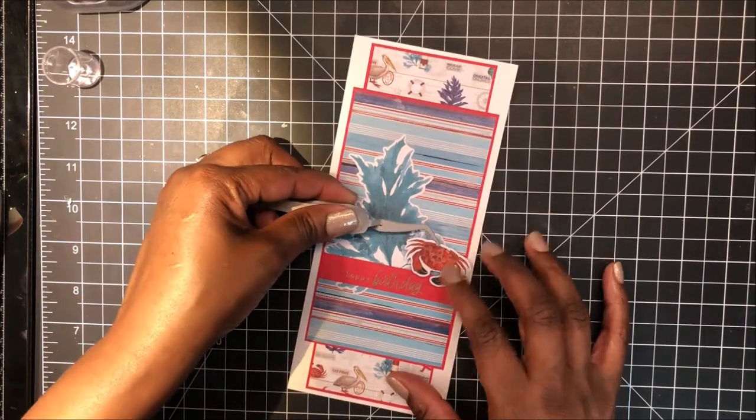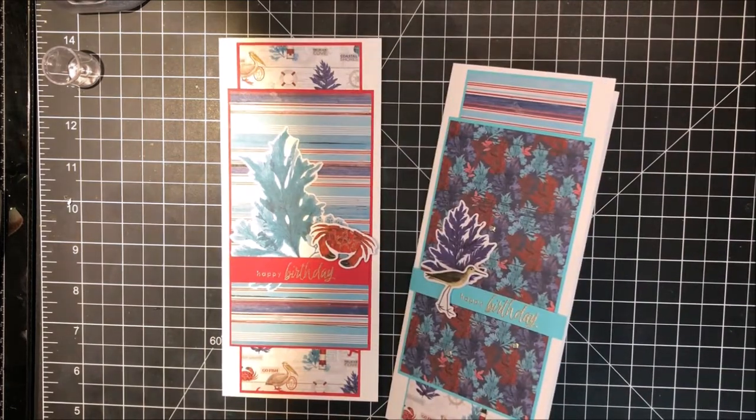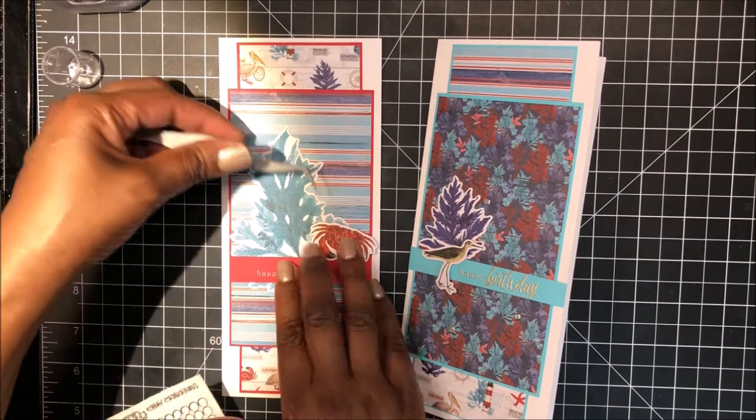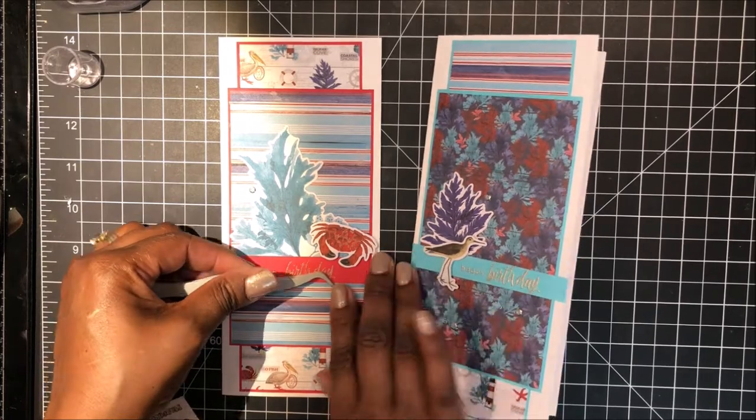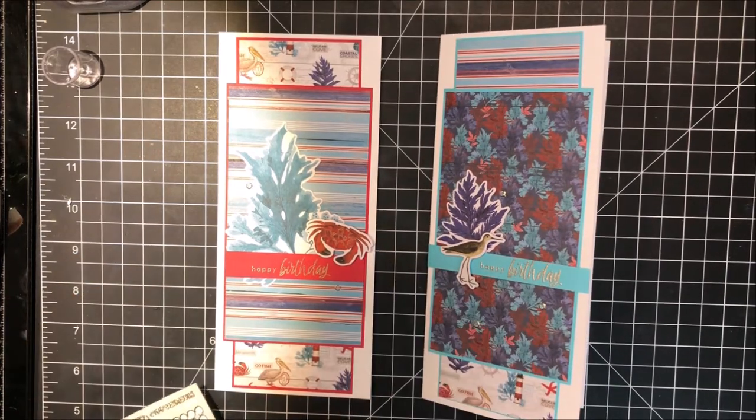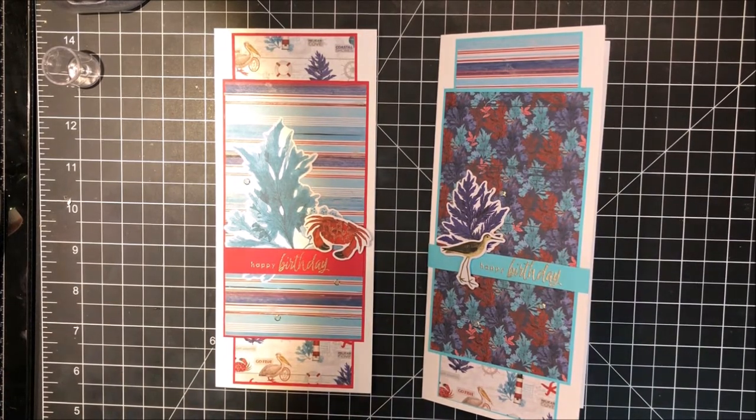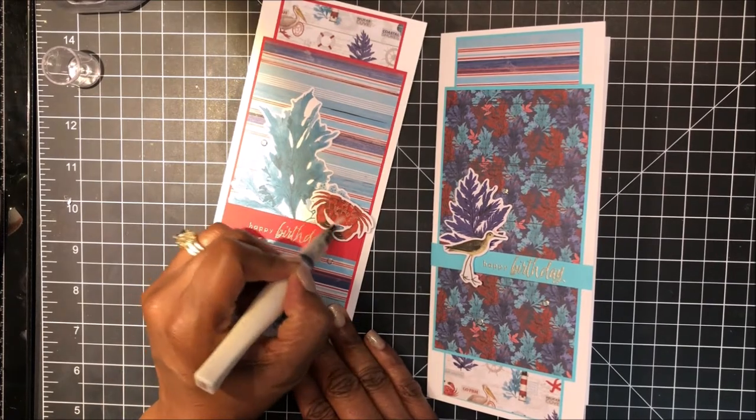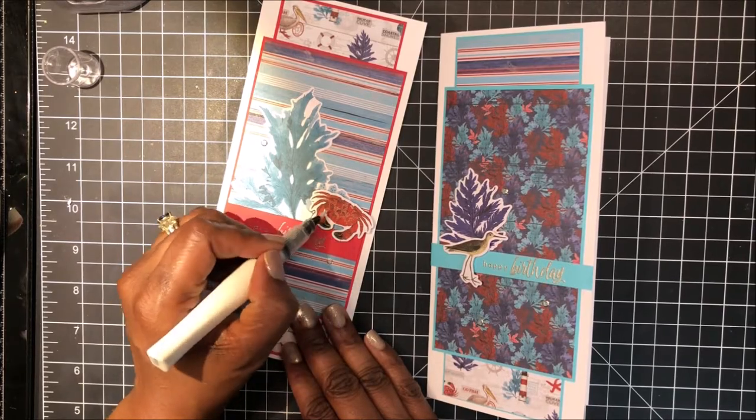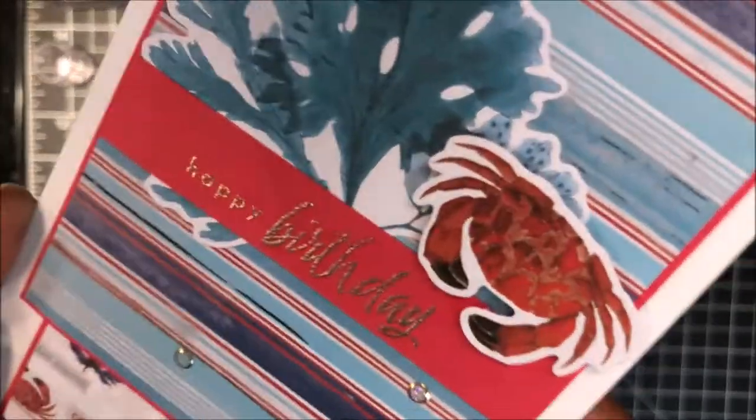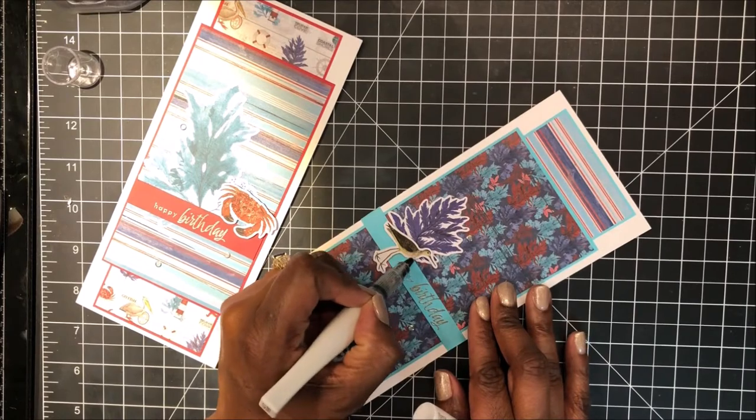And I've made a second card using slightly different elements, same design, pop the crab up on foam tape and the same for the bird in card number two. And then I'm bringing in my Elizabeth Crafts gold peel-offs and placing three of those throughout the design. And here I'm bringing in Wink of Stella and coloring in my crab. And we'll do the same for my bird in the second card. Love that shimmer from the Wink of Stella pen. And let's take a closer look at both of these cards.